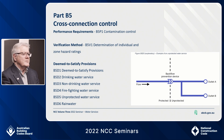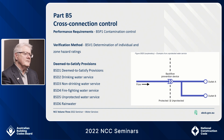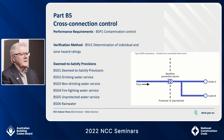One provision I want to specifically bring to your attention is the new DTS for 2022: B5D5 unprotected water service. It is where pipework and outlets supplied by a drinking water source downstream of an individual protection backflow prevention device are considered to convey drinking water from an unprotected water service. Another is B5D6 rainwater, which refers the user back to a clause in AS/NZS 3500.1 2018 that covers backflow provisions for rainwater. This new clause does not change stringency from NCC 2019 — it just adds it and makes it a lot clearer and easier to find.